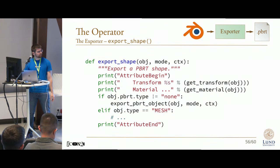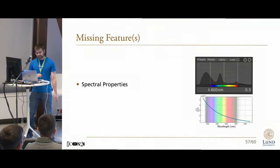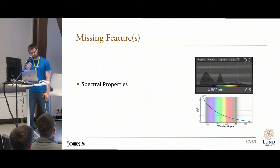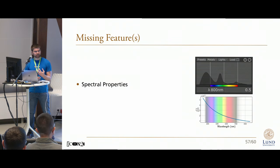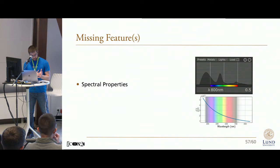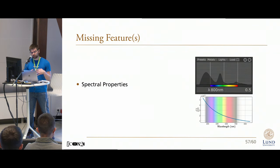That is pretty much everything that I have to talk about exporters. The last thing I want to bring up is something I haven't really found a good way of solving, namely spectral properties. In short, RGB colors that we typically use is just a very efficient hack to represent material properties, but they have some real limitations when it comes to representing things in a physically correct way. In reality, how light actually interacts with materials can differ a lot depending on what part of the spectrum the light actually contains.